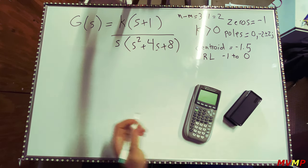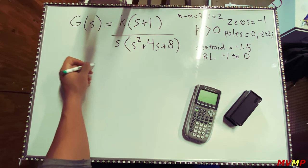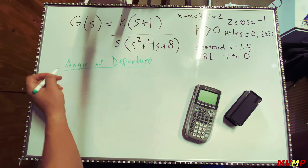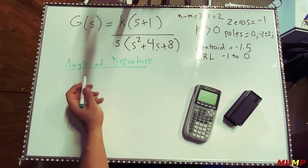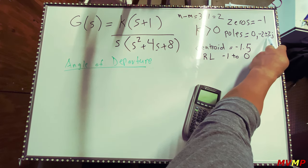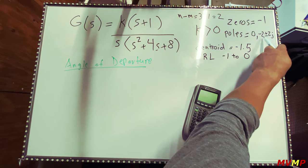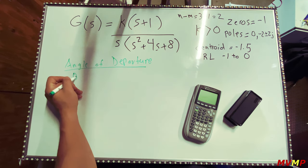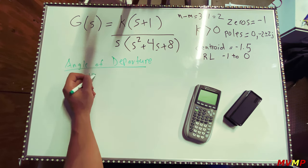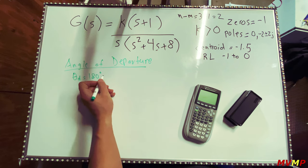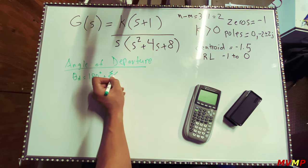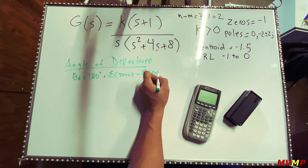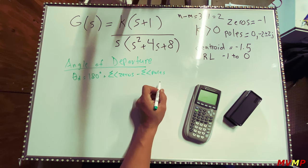Now we solve for angle of departure. For an angle of departure there need to be complex poles, and in our case we have complex poles at negative 2 plus 2j and negative 2 minus 2j. The formula for angle of departure is the opposite of angle of arrival: sum of angles of the zeros minus the sum of angles of the poles.